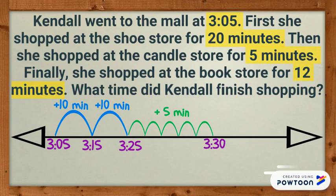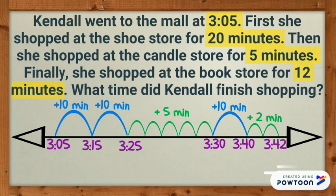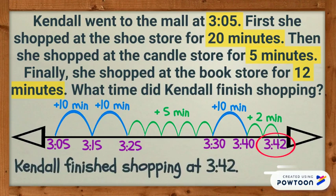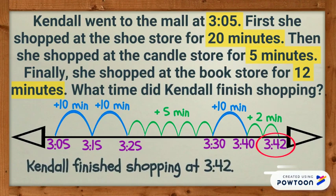Finally, I can add 12 as one group of 10 and get to 3:40, and two 1s to get to 3:42. 3:42 is my ending time. We solved the problem — we added up all the time intervals, and now know that Kendall finished shopping at 3:42.